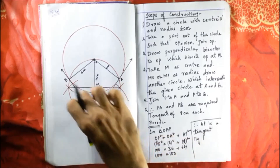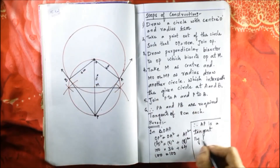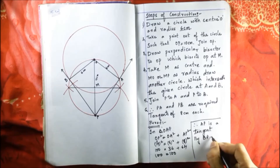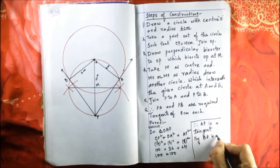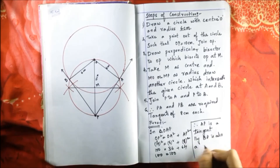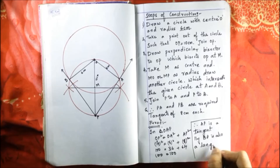Therefore AP is a tangent. Similarly, BP is also a tangent.